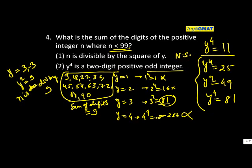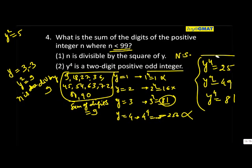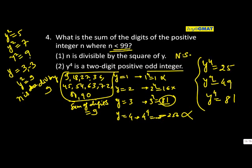If y to the power 4 is 25, what would have been y squared? These three numbers qualify for sure now. y squared could be 5—take the square root—or y squared could be 7, or y squared could be 9. Now I can say n is divisible by 5 or 7 or 9.